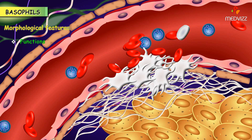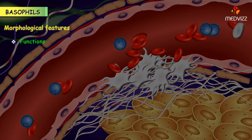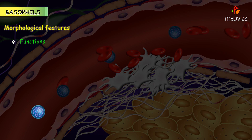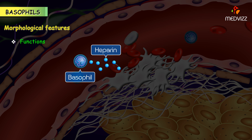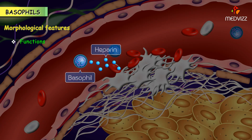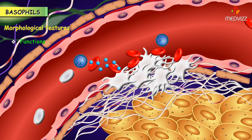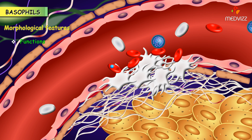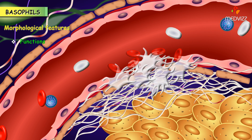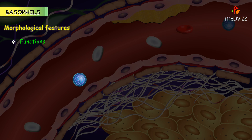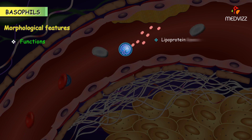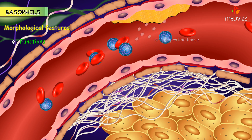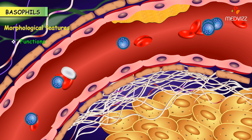An important function of the basophil is the release of heparin to prevent coagulation in vivo. Basophils in the blood prevent clotting of the blood and activate an enzyme called lipoprotein lipase, which removes fat particles from the blood after a fatty meal.